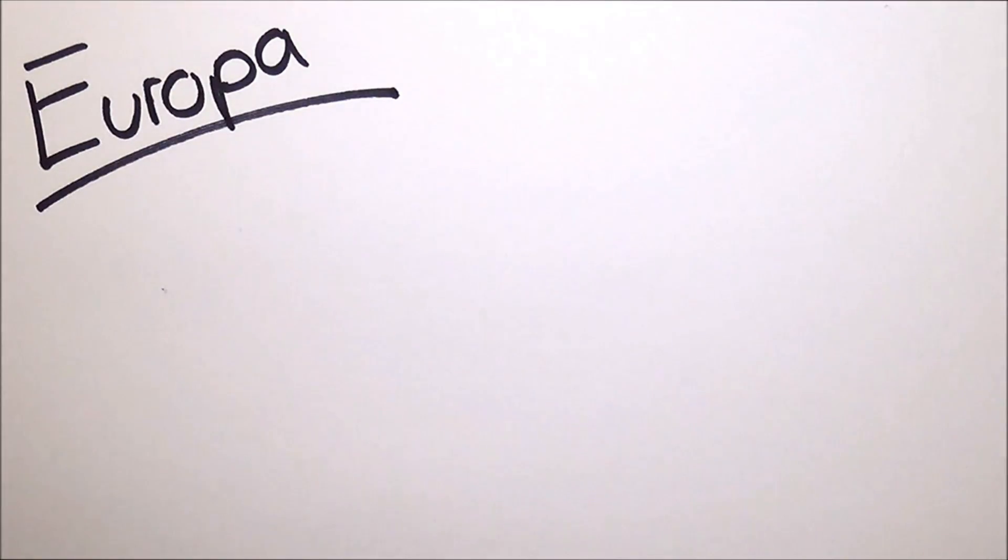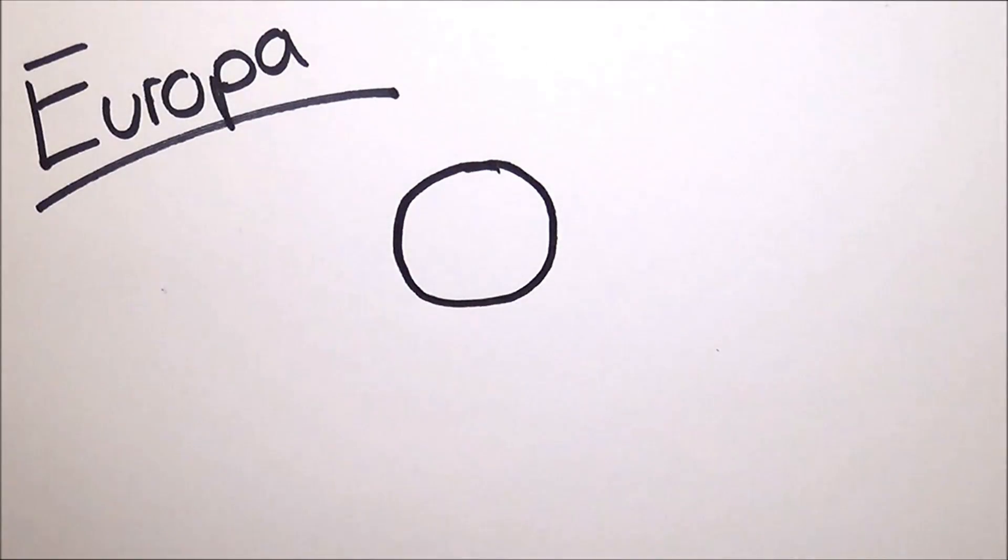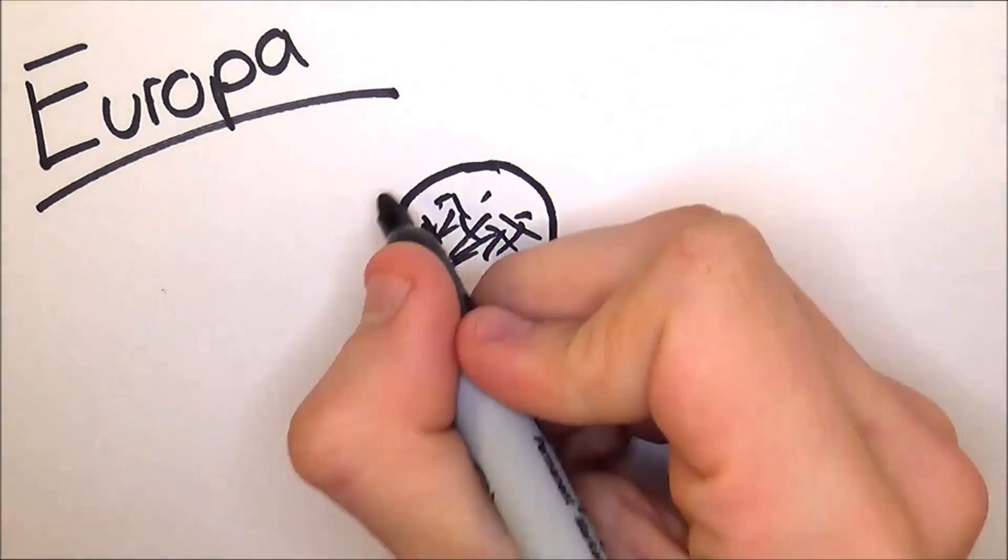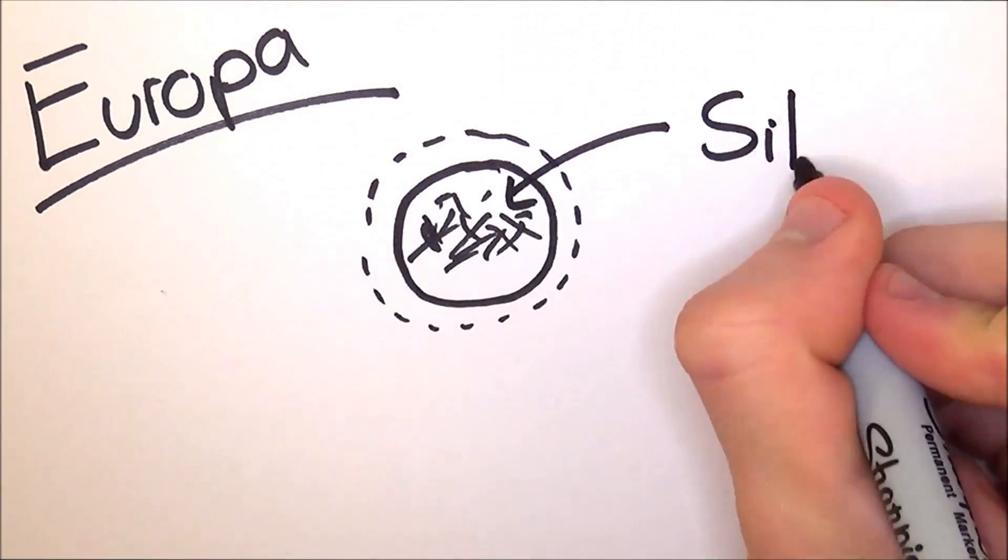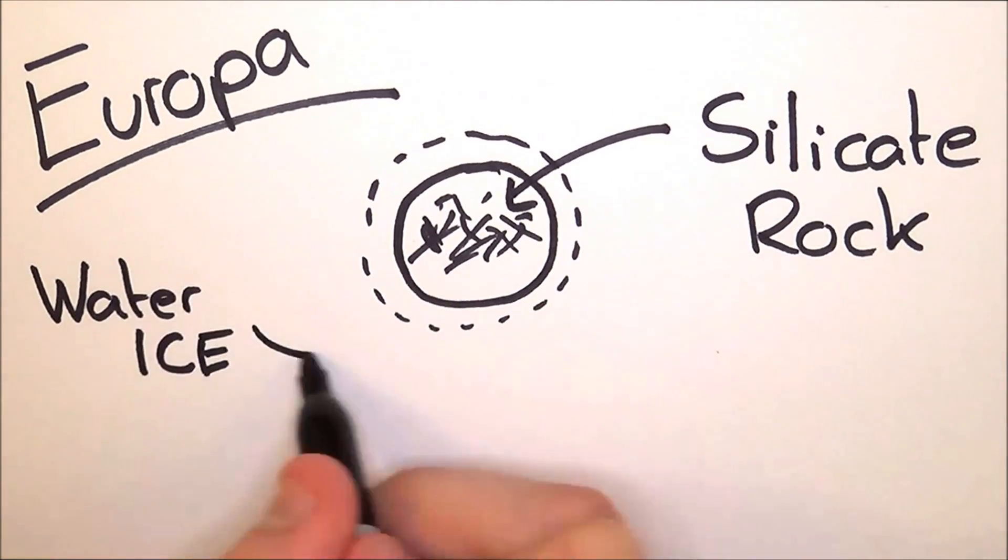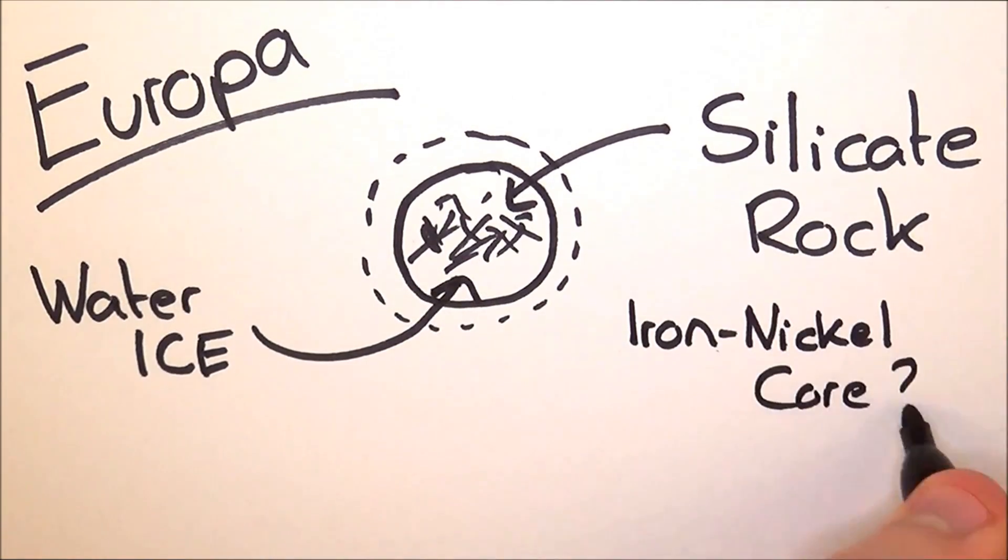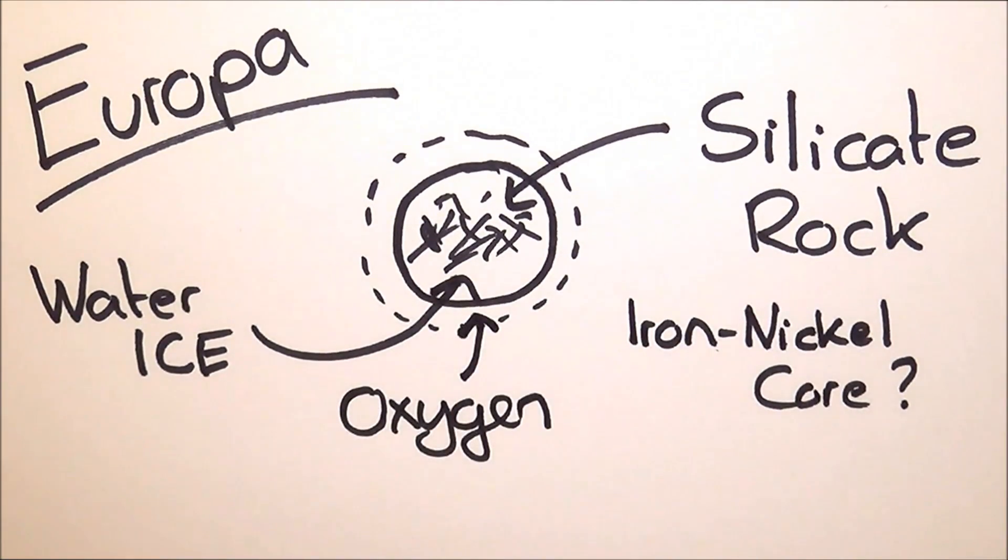Now Europa, its surface is made up of silicate rock and has a water-ice crust and probably an iron-nickel core. It also has a weak atmosphere mainly composed of oxygen. Remember, our atmosphere is mainly composed of nitrogen, which is far more important to us. Too much oxygen would spell the end of life on Earth.